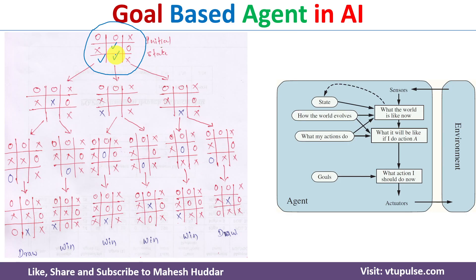The AI agent will identify the tree of all possibilities and then identify the one move which gives the maximum performance — in this case, winning the game. The AI agent can play in one of three positions. Once it plays, the next move is the human's. If the agent plays here, the human has two possibilities; this is the first one and the second one.